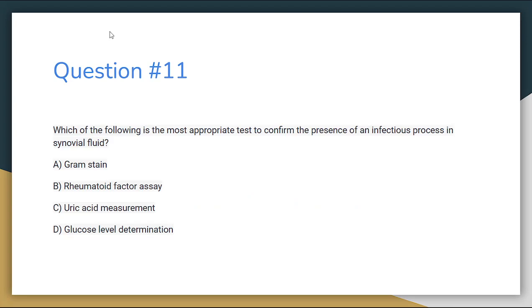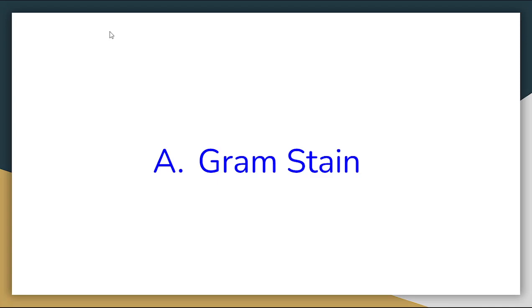Number 11. Which of the following is the most appropriate test to confirm the presence of an infectious process in synovial fluid? Letter A: Gram stain. Letter B: Rheumatoid factor assay. Letter C: Uric acid measurement. Or letter D: Glucose level determination. The correct answer for number 11 is letter A, Gram stain.